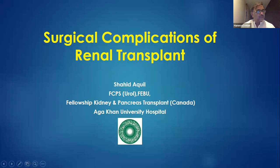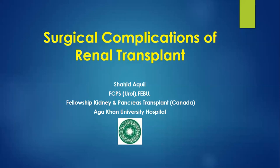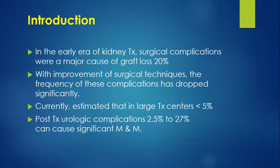Surgical complications of renal transplantation: in the early era of kidney transplantation, surgical complications were a major cause of graft loss — around 20% in the 1980s. With improvement of surgical technique, this dropped significantly, and currently at large transplant centers, post-surgical complications are less than 5%. Post-transplant urological complications occur in 2.5 to 27% of cases and can cause significant morbidity and mortality.